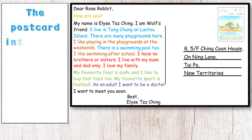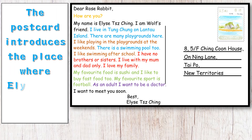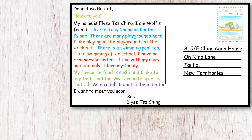The postcard introduces the place where Elise Tzijun lives. We can see those sentences: 'I live in Tongzhong on Lantau Island. There are many playgrounds here. There is a swimming pool too.' These sentences are a good introduction — in introductions, you talk about where you live.